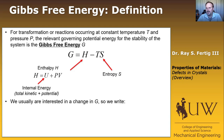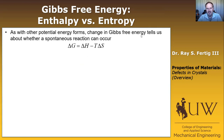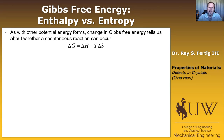Just as before, the absolute value is not as interesting as the relative value. We're interested in the change of G — the change in Gibbs free energy. We typically write delta G equals the change in enthalpy minus the temperature times the change in entropy. As with other potential energy forms, it's the change in Gibbs free energy that tells us whether a spontaneous reaction can occur.